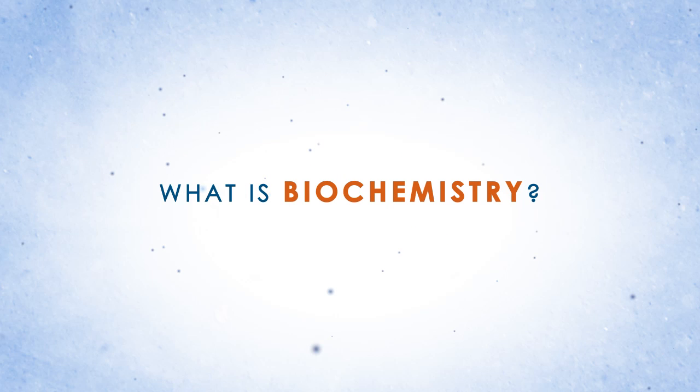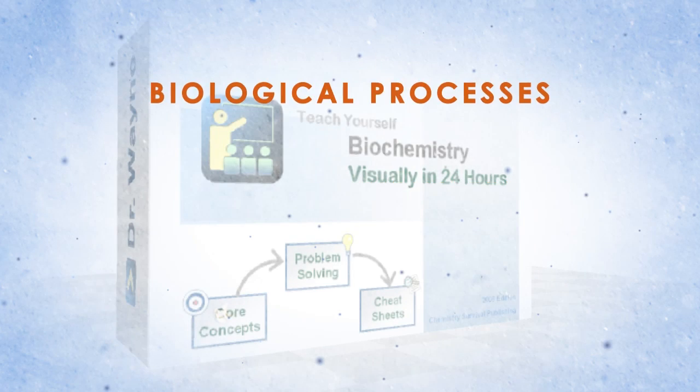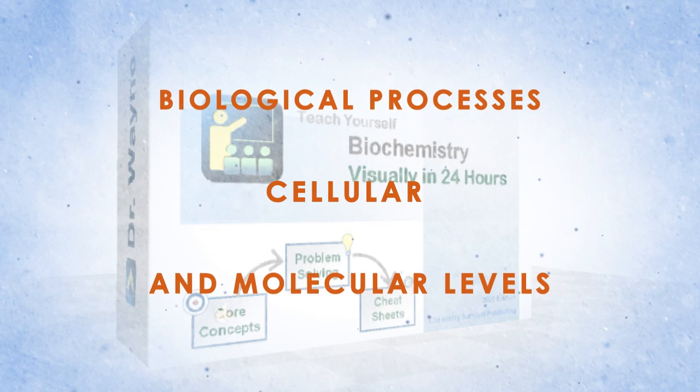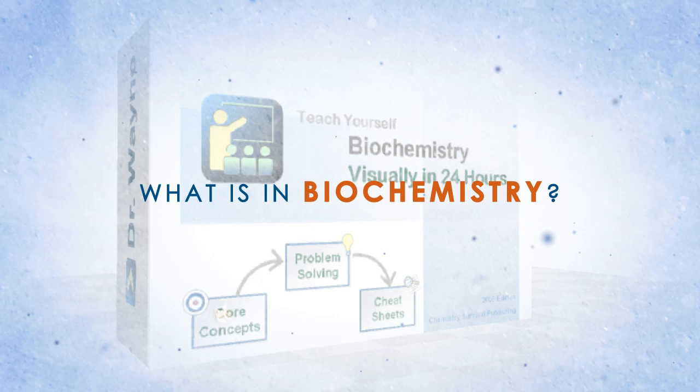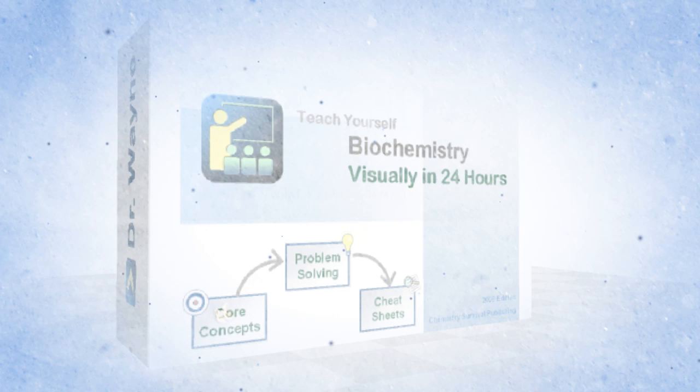Biochemistry is the application of chemistry to the study of biological processes at the cellular and molecular levels. In this course taught by biochemistry professors, you will first review the general chemistry and organic chemistry. You will then learn the chemistry of living systems, one chapter, one hour at a time, visually, in 24 hours.